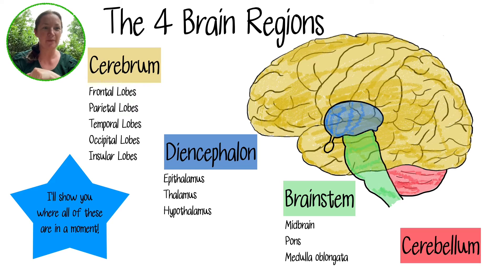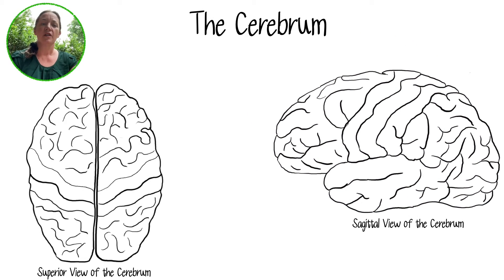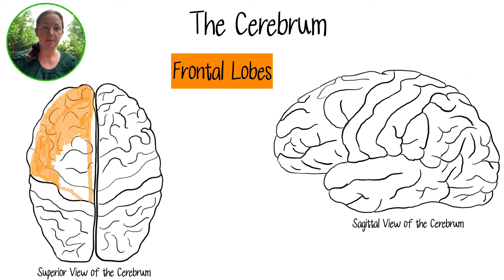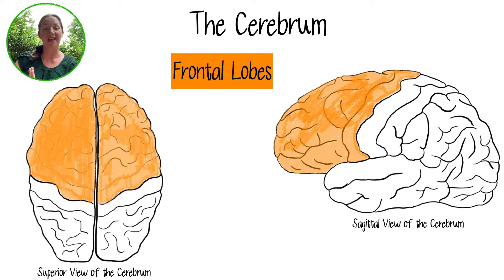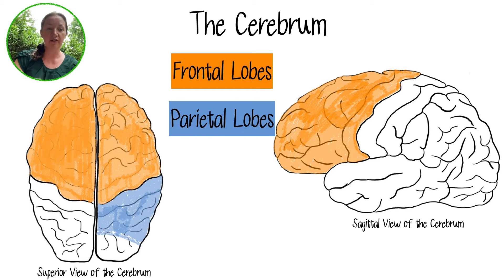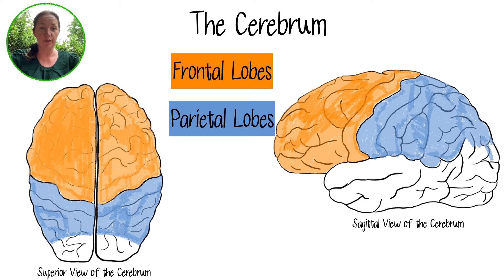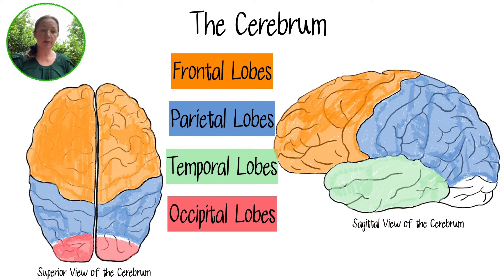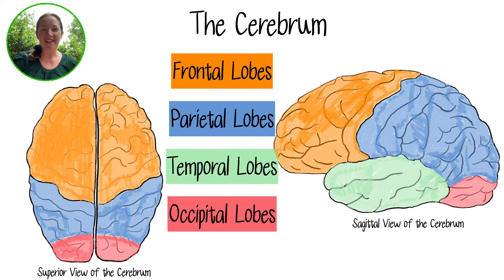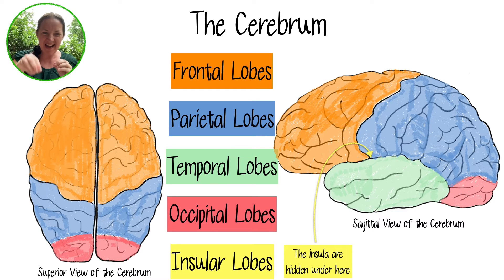We are going to focus on the cerebrum for the rest of this video. I have two images here — one is a superior view of the cerebrum and the other is the sagittal view. You can see both lobes of the parietal from the top, but only one from the sagittal view. The temporal lobes you can really only see from the sagittal view. The occipital lobes you can see from the top and a little from the side. And then there's the fifth lobe, the insular lobes, which are hidden under the temporal lobe.